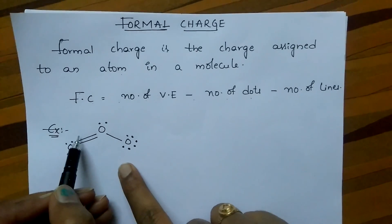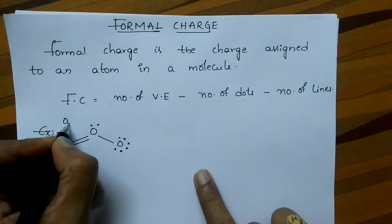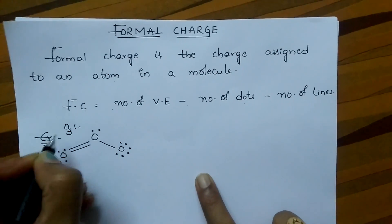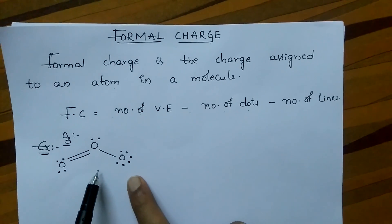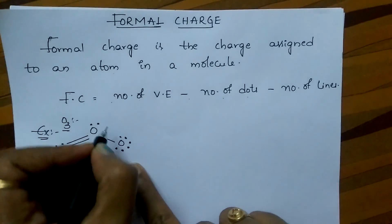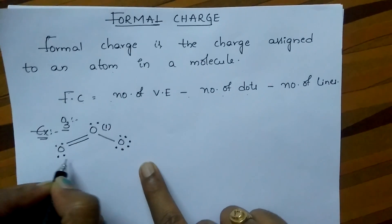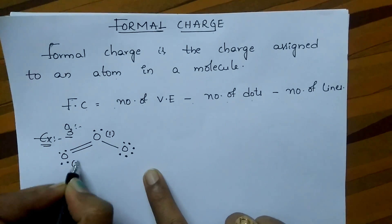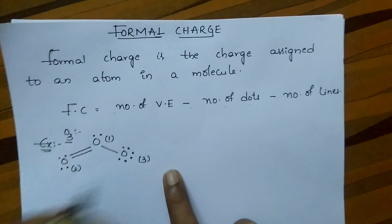Now take an example of the O3 molecule. This is the Lewis dot structure for O3. Now mark it as first oxygen, second oxygen, third oxygen.